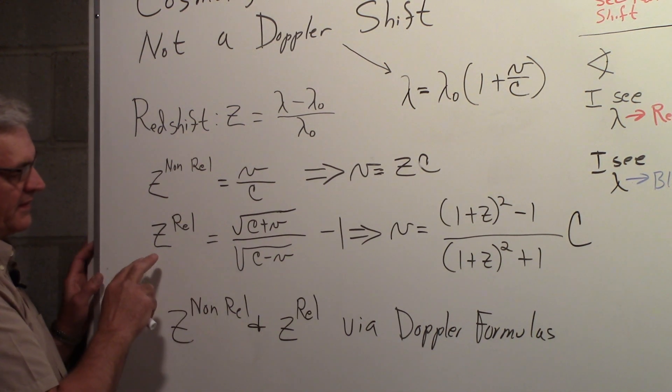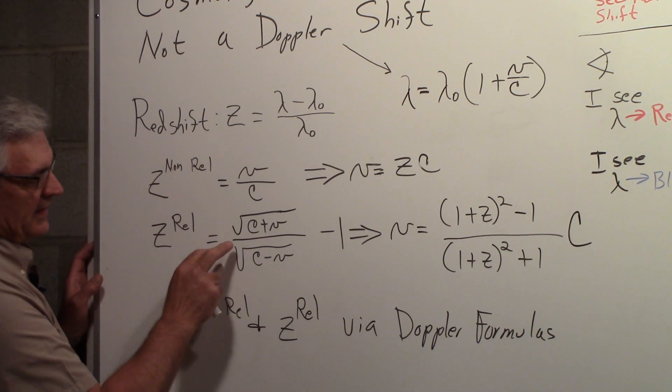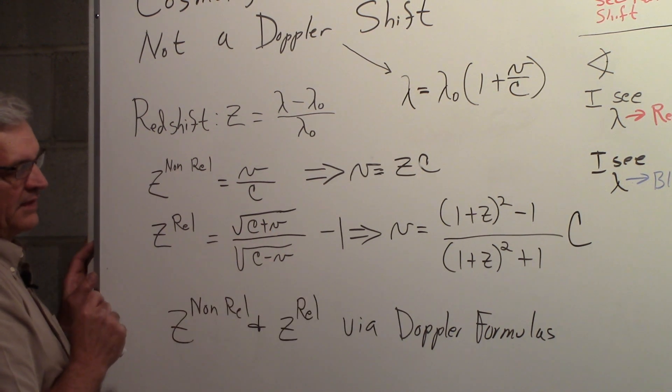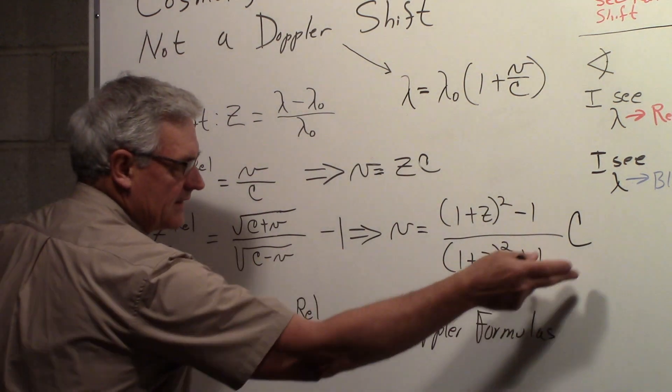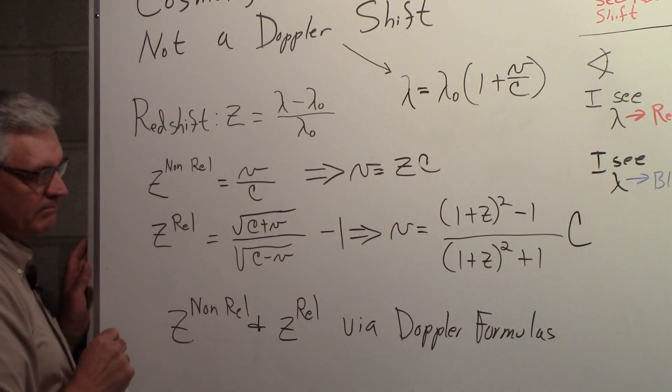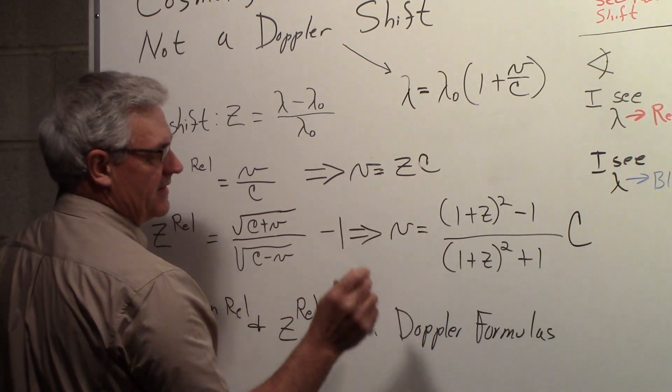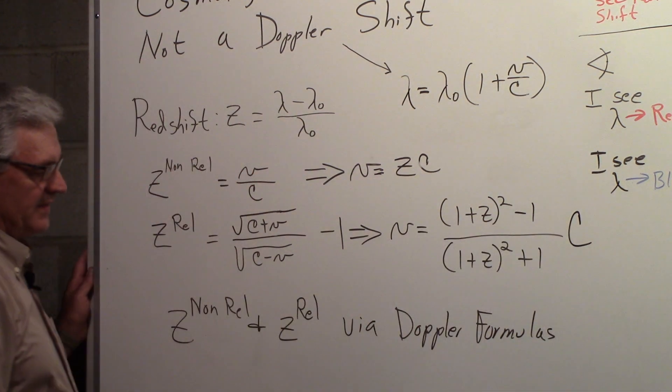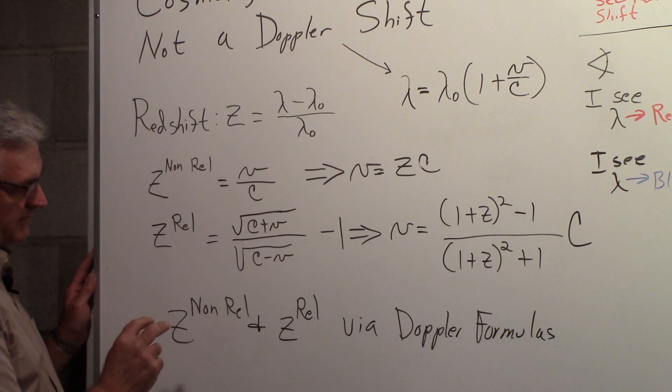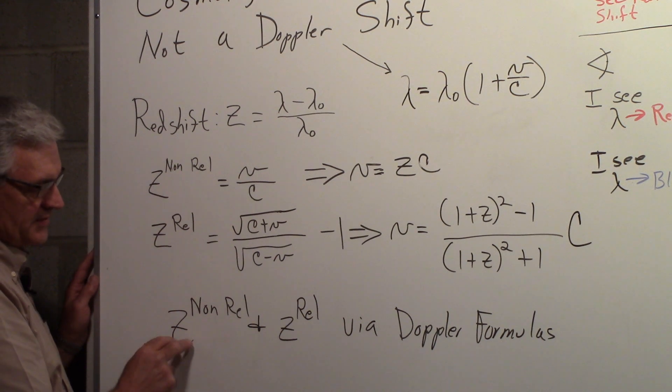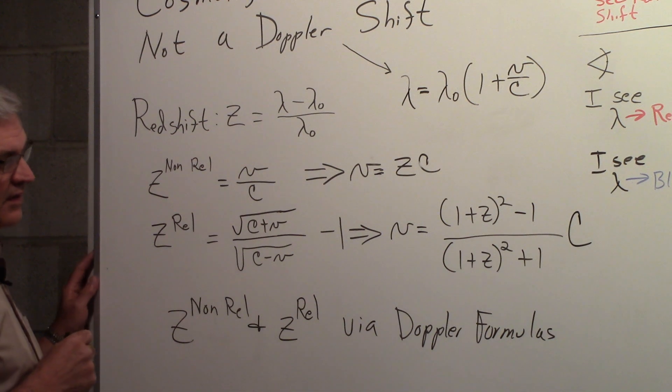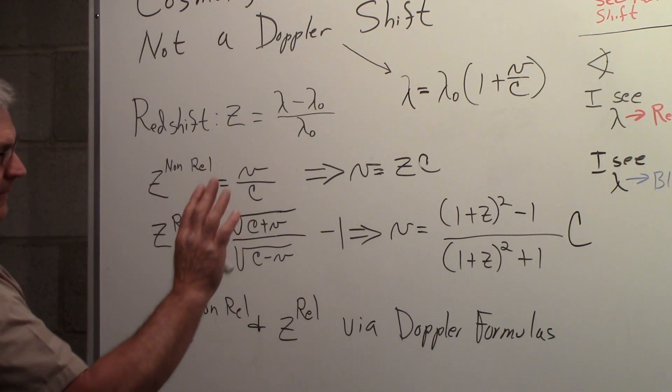There's a relativistic formula for the redshift, and that's √(c+v)/√(c-v) - 1. And if we solve for v there, we get this expression. So here we simply have z times c, and here we have some arrangement of z times c. So these are formulas for z, non-relativistic and relativistic, via the Doppler formula.